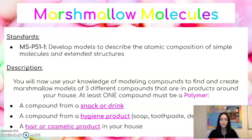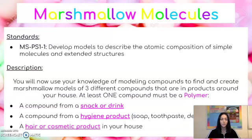First, you are going to find a snack or a drink product that has a clear list of ingredients and find one compound. This could be soda, chips, a snack — anything as long as it has listed ingredients. You will find one compound from a snack or a drink.